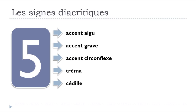The idea of this video is only to present these five signs. In the next lessons, in the next units, I will focus on explaining how to pronounce them, because the pronunciation will change — if you put l'accent aigu on the top of E, you won't pronounce it like you would without the accent. But keep in mind that we've got these five signes diacritiques: accent aigu, accent grave, accent circonflexe, tréma, cédille.